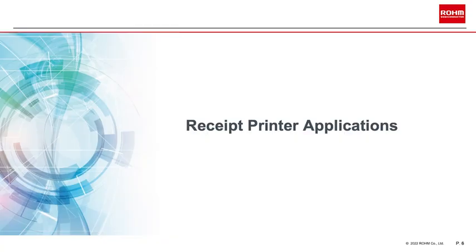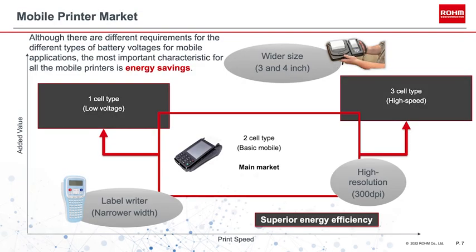Now let's transition to our discussion of markets and applications. I will introduce print heads for the receipt printer market. Receipt printers are broadly divided into two types: mobile printers powered by batteries and stationary receipt printers powered with a plug. Let's go over the mobile receipt printer market.